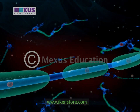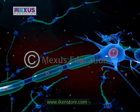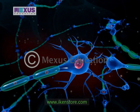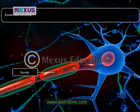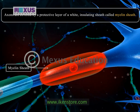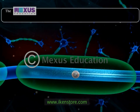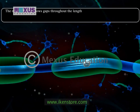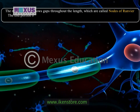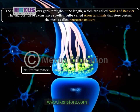The axon, also called the nerve fiber, is a long process of the neuron cell body. The axon is specialized to carry messages. An axon of one neuron may have enough branches to make contact with as many as one thousand other neurons. Axons are covered by a protective layer of a white insulating sheet called the myelin sheath. The myelin sheath shows gaps throughout its length which are called nodes of Ranvier. The end portions of axons have swollen bulbs called axon terminals that store certain chemicals called neurotransmitters.